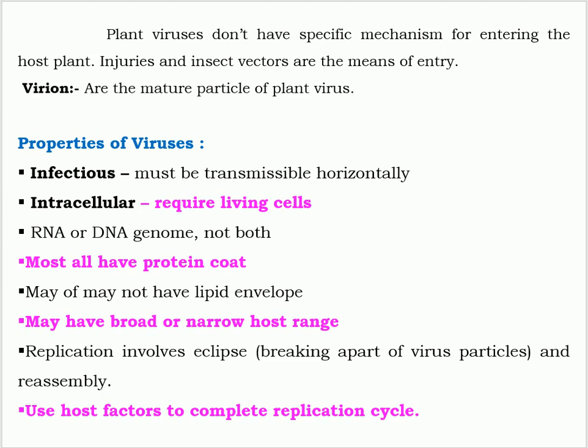Virions are the mature particles of the plant virus. Now let us see the properties of viruses. Viruses are infectious and must be transmissible horizontally. They are intracellular and require living cells. They have either RNA or DNA genome, not both. Most have a protein coat and may not have a lipid envelope. They may have broad or narrow host range. Replication involves eclipse, meaning breaking apart of the virus particles, and reassembling. They use host factors to complete the replication cycle.